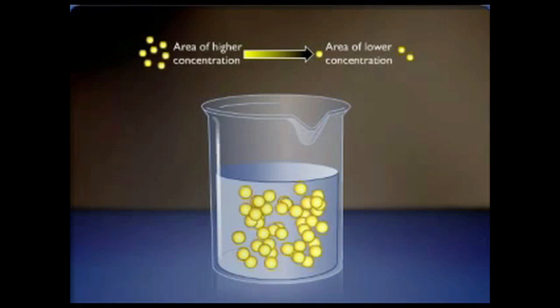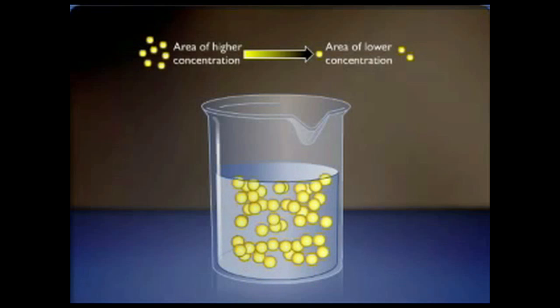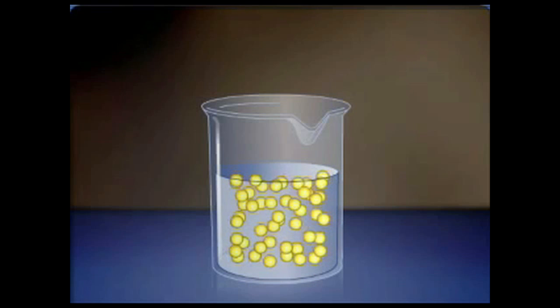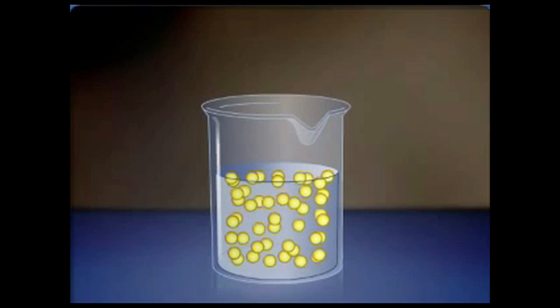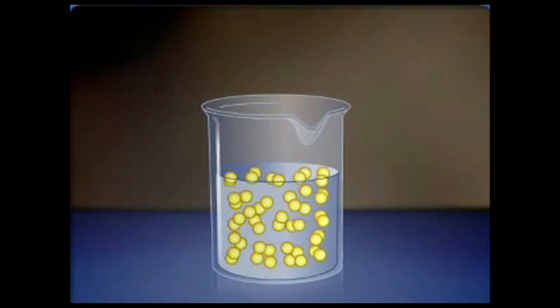Diffusion continues until all the sugar molecules become evenly dispersed throughout the beaker. The rate of diffusion is affected by temperature, size of molecules, and the steepness of the concentration gradient. Although not specifically shown in this animation, this is one of the processes whereby materials are exchanged between a cell and its environment.